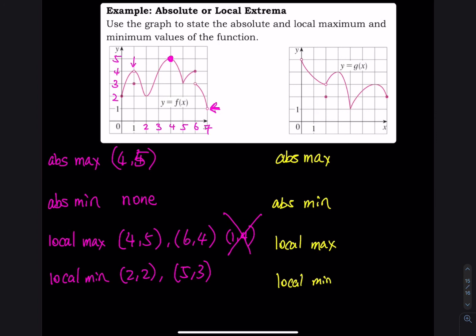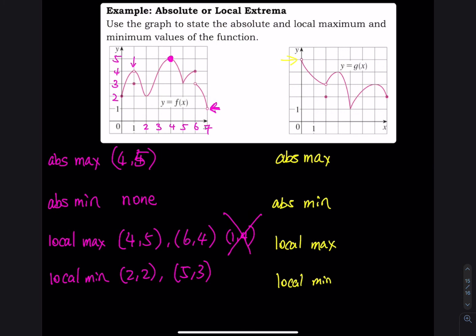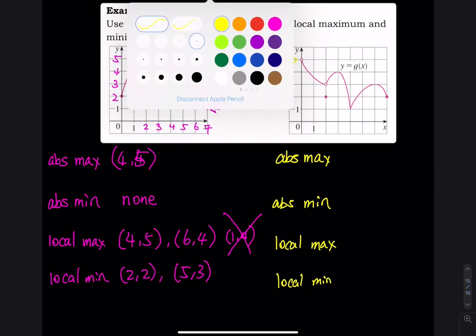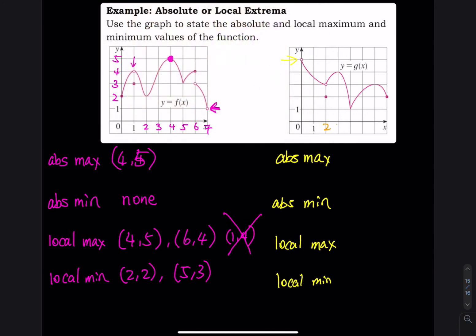Moving on to the picture on the right. The absolute maximum is the highest y value, which looks like it should be right here. Filling in the axes: x goes 1 through 7, y goes 1 through 5. The biggest y value is 5, but the function is not defined at that point, so the absolute maximum is none. The absolute minimum is the smallest y value, y equals 1, at x equals 4, y equals 1.